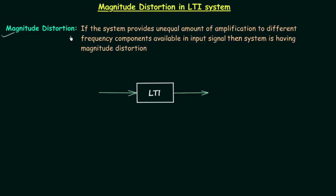If the system provides an unequal amount of amplification or attenuation to different frequency components available in the input signal, then the system is having magnitude distortion. If there are different frequency components available in the input signal and the output has those frequency components with unequal amounts of amplification, then we can say the system is having magnitude distortion.